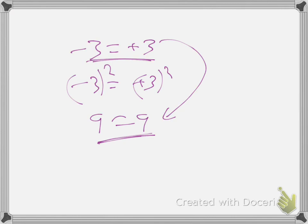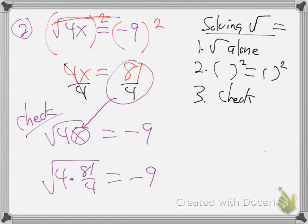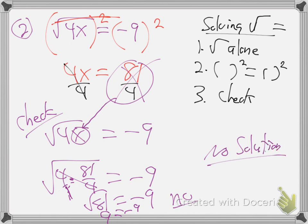That's why you have to check. Put in 81 fourths: simplify — the square root of 81 is regular nine, not negative nine. So that's not true. Cross that answer off — this problem has no solution. They can be more tricky than that; sometimes you won't see a negative anywhere, but it sneaks in when it's an x. So it's way more tricky — you really need to check. This one's obvious, but they'll be trickier, so you always have to check.